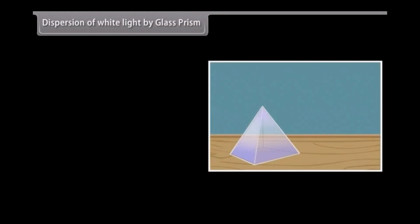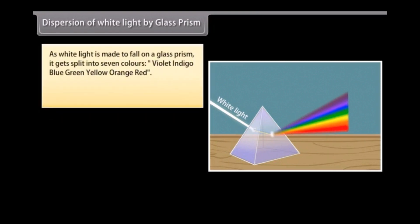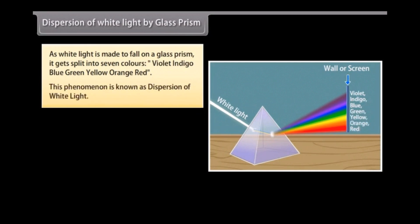When white light is incident on a glass prism, it gets split into seven colors: violet, indigo, blue, green, yellow, orange, and red. This phenomenon is known as dispersion of white light.